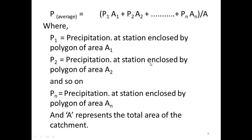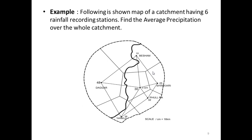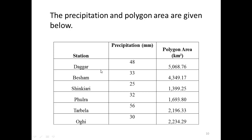Example of the Thiessen Polygon Method: A map of a catchment has six rainfall recording stations — Dhagar, Bisham, Hinkari, Pulpa, and Tarbela. These stations are all connected through the Thiessen Polygon Method, making polygons. All stations are connected with each other forming triangles, and as a whole it forms a polygon. The precipitation and polygon area are given below.